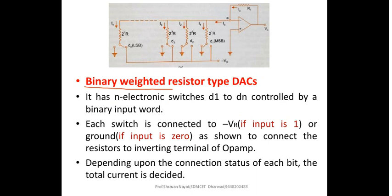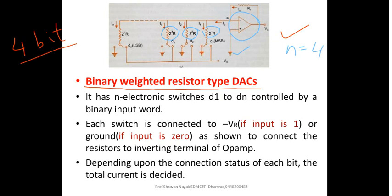Please have a careful observation of this particular diagram. We are making use of an operational amplifier here in the inverting mode; the non-inverting terminal is grounded. We are making use of four different resistor types. One value is 2 to the power of 1 times R, second is 2 to the power of 2 times R, 2 to the power of 3 times R. This is an n-bit DAC, but let us restrict n to 4, making it a 4-bit DAC. Let us take n as 4.